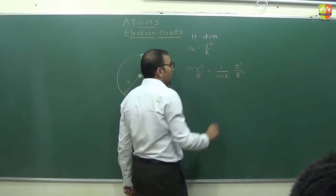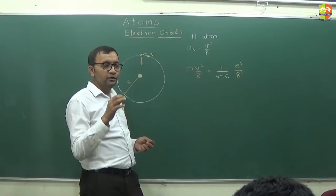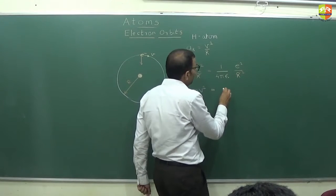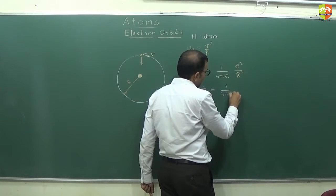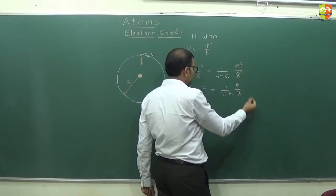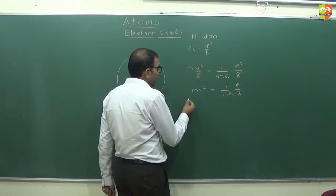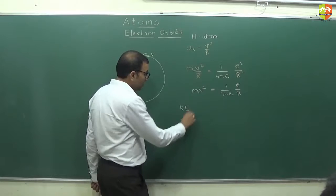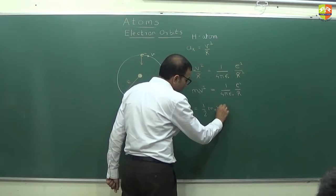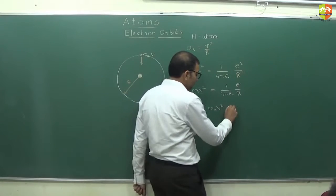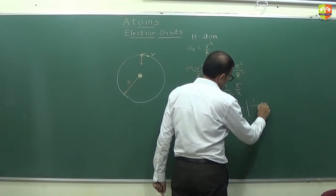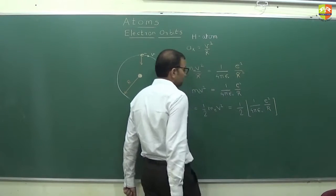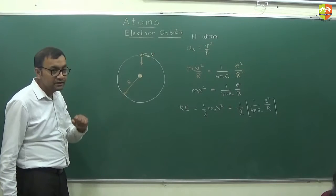So you get MV² = (1/4πε₀)·(e²/R). The kinetic energy of the electron is ½MV², which equals half of (1/4πε₀)·(e²/R). This is the kinetic energy of the orbiting electron.